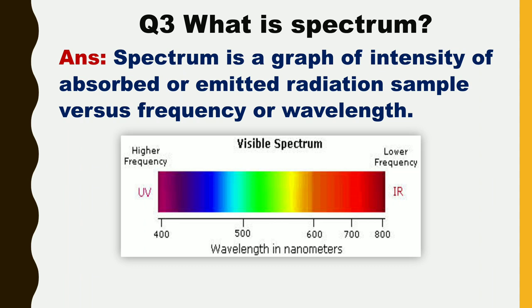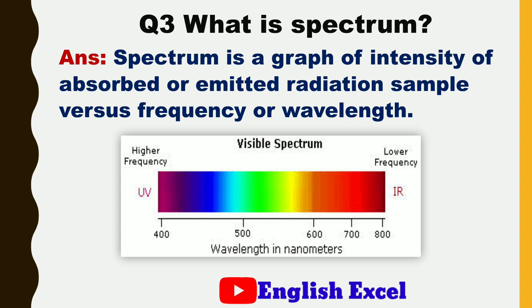Next question is: what is spectrum? The answer is, spectrum is a graph of intensity of absorbed or emitted radiation of a sample versus frequency or wavelength.